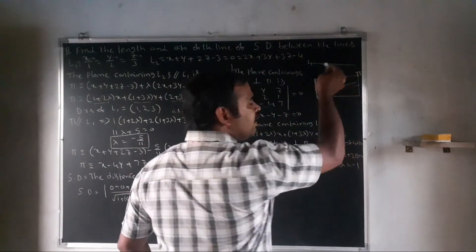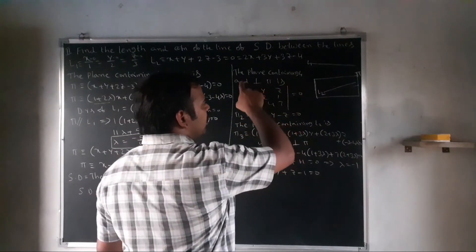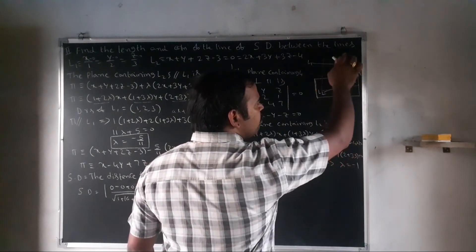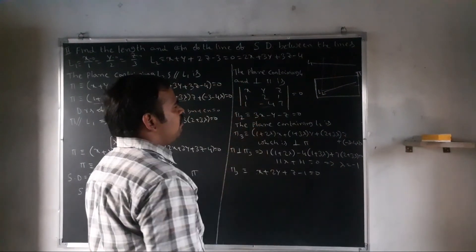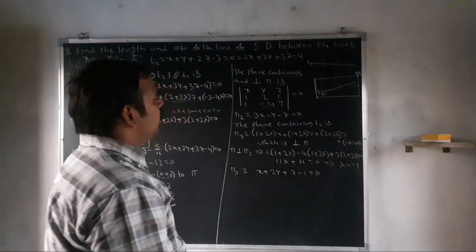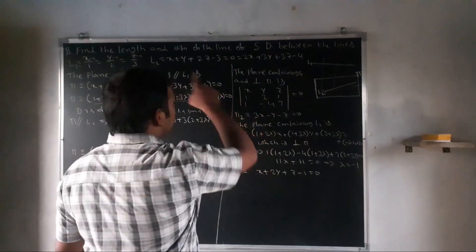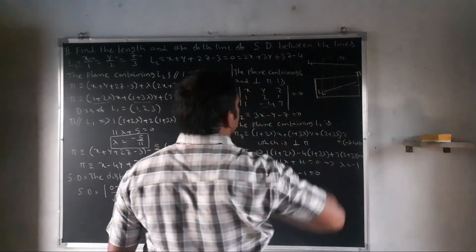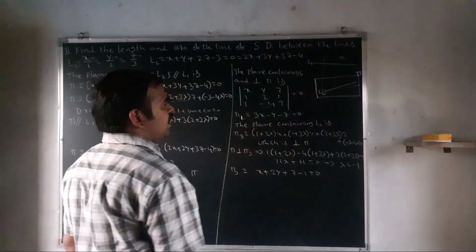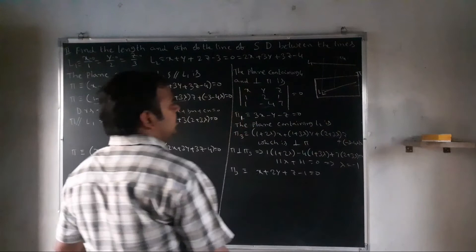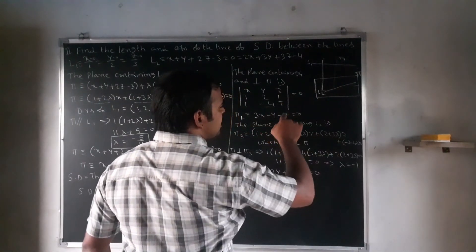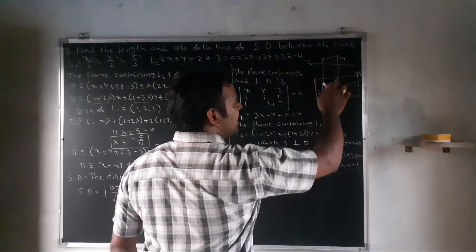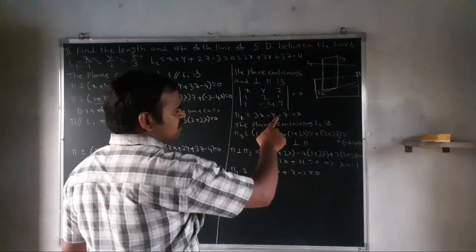For the SD line equation: the plane containing L1 and perpendicular to π5 is found using the determinant formula |x - x1, y - y1, z - z1; L, M, N; A, B, C| = 0, with point (0, 0, 0) on L1. This gives plane π1: 3x - y - z = 0.